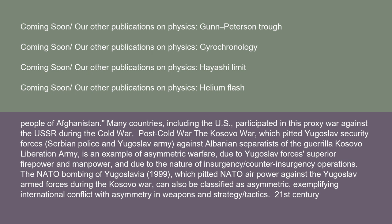Post-Cold War, the Kosovo War pitted Yugoslav security forces — Serbian police and Yugoslav army — against Albanian separatists of the guerrilla Kosovo Liberation Army. This is an example of asymmetric warfare due to Yugoslav forces' superior firepower and manpower and the nature of insurgency/counterinsurgency operations. The NATO bombing of Yugoslavia in 1999 can also be classified as asymmetric, exemplifying international conflict with asymmetry in weapons and strategy.